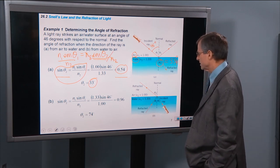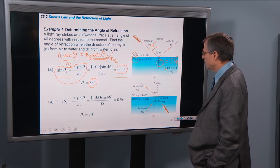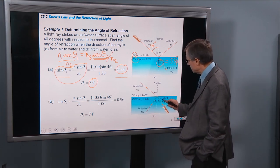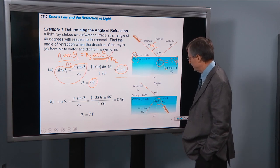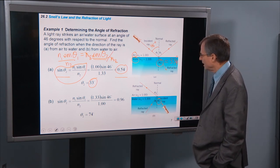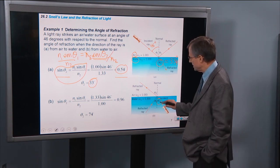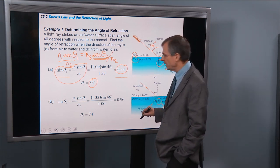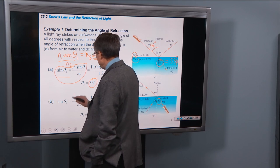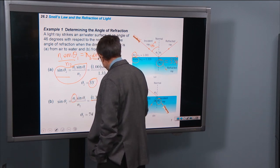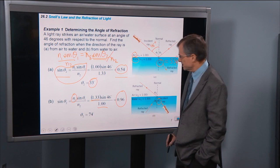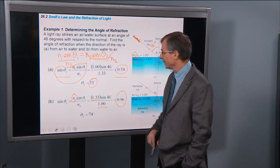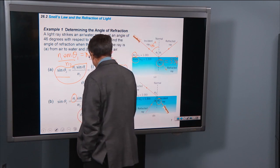Alright, so what happens if we start off with the incident ray in the water and θ1 is 46 degrees? Then everything reverses. N1 is now 1.33. And so this N1 becomes 1.33, N2 becomes 1. And we get that the sin of θ2 is 0.96. Take the inverse sine to find the angle, and we get 74 degrees.